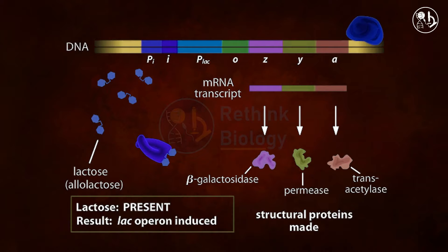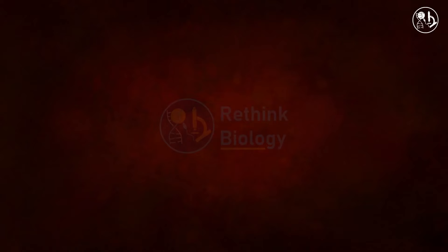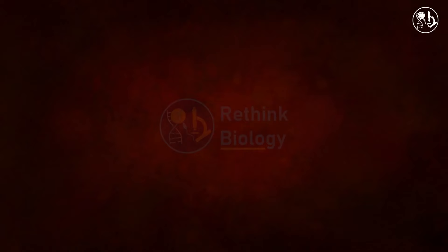The lac operon is an inducible system, which means it is switched off until an inducer — lactose — is introduced. Other operons, such as the trp operon, work in the reverse way: the system produces gene products from the operon until a repressor is activated, which then shuts down expression.